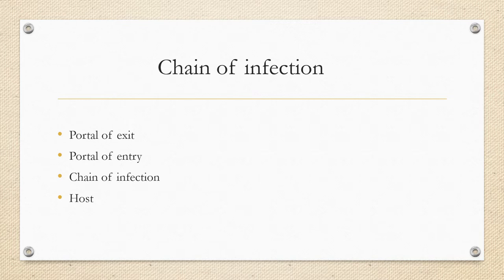Portals of entry include damaged skin, mucous membranes, and attachment to host tissues. Sometimes pathogens use the same portal of exit as they do for entry — for example, influenza and the respiratory tract. Portal of exit is the path used by pathogens to leave the host, including crossing the placenta or blood-sucking arthropods. The final link in the chain of infection is a susceptible host, where susceptibility can be influenced by genetics, compromised immune system, or lifestyle choices.